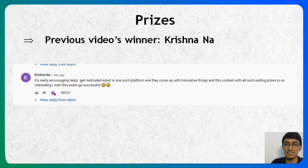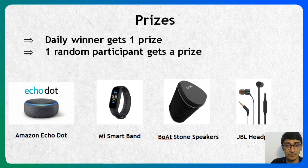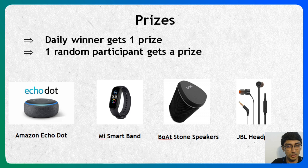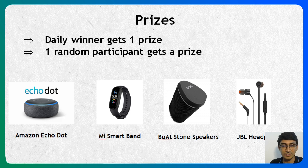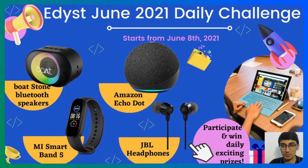We have four more days of daily challenges, and you too could win a prize from Edist. The prizes on offer include an Amazon Echo Dot, an MI Smart Band, Boatstone speakers, and JBL headphones. So make sure you're registered and make the full use of these daily challenges coming your way. Wishing you all the best — I can't wait to see you all on the Edist platform. All the best for the June daily challenges! Thank you so much.